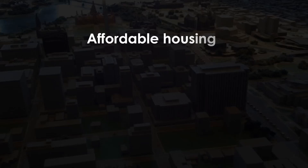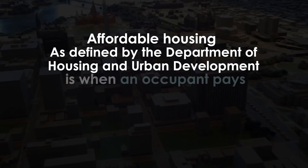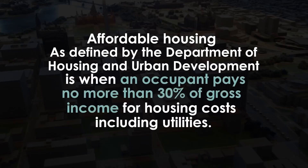Affordable housing, as defined by the Department of Housing and Urban Development or HUD, is when an occupant pays no more than 30% of gross income for housing costs including utilities.